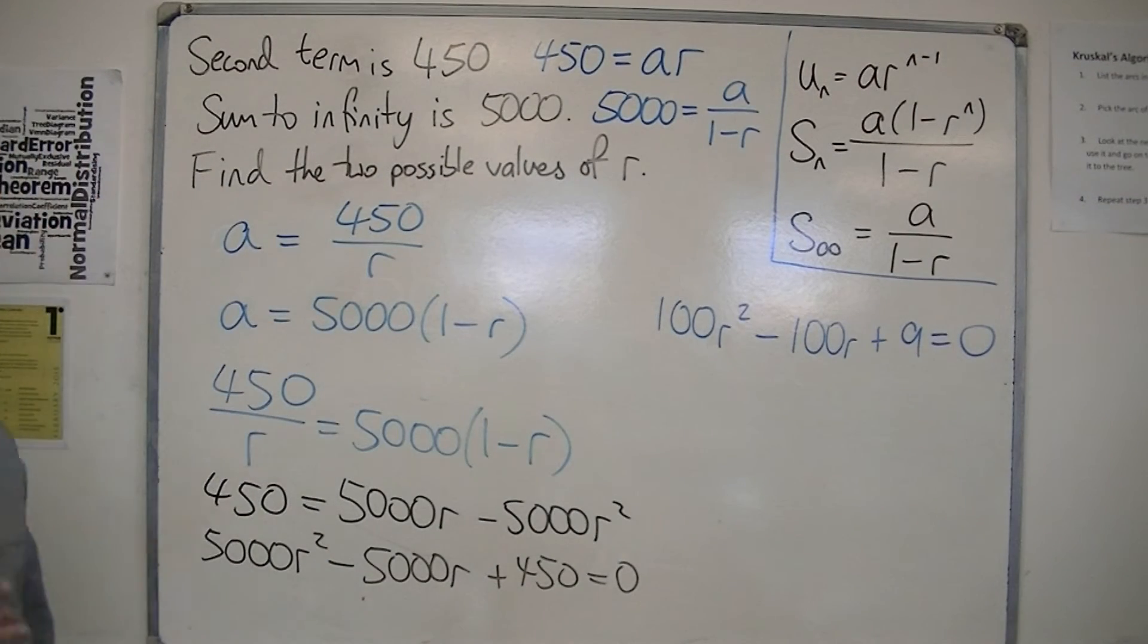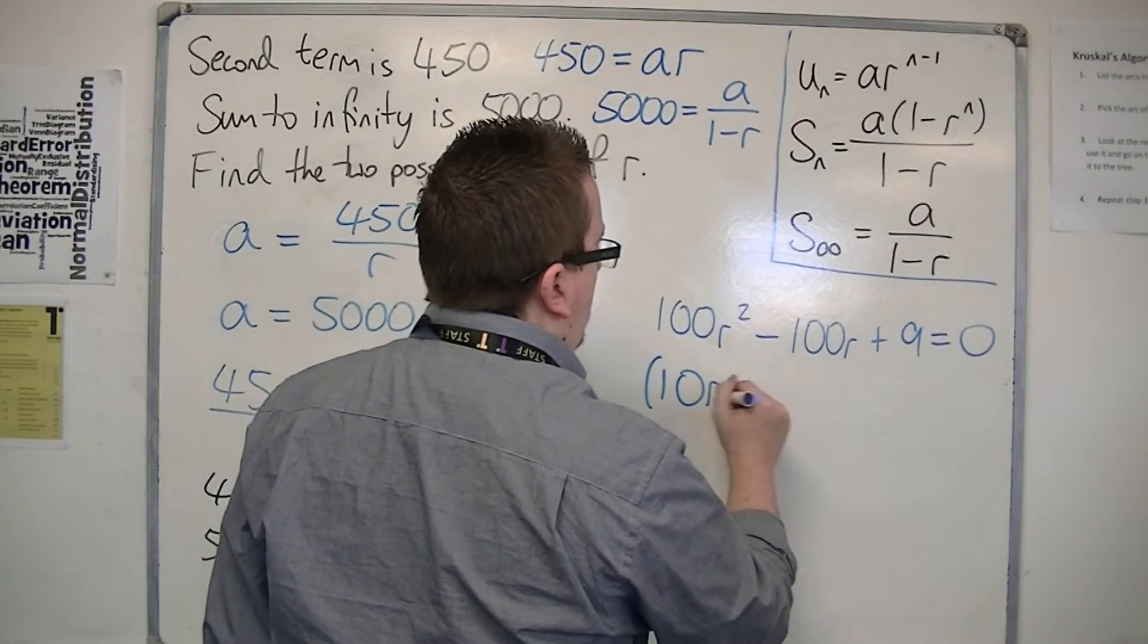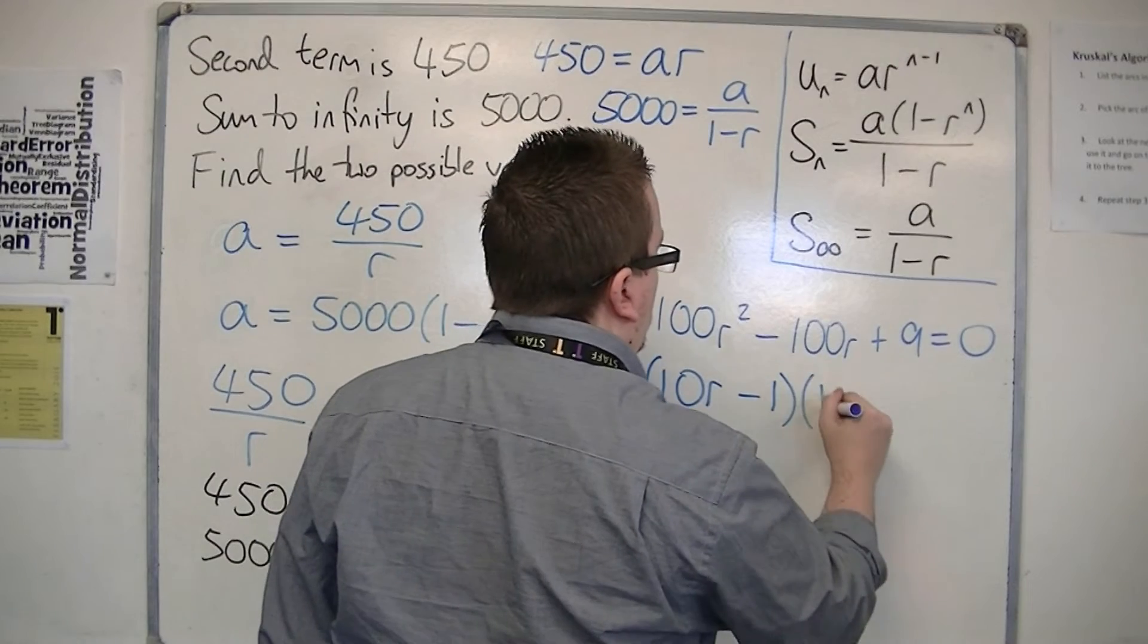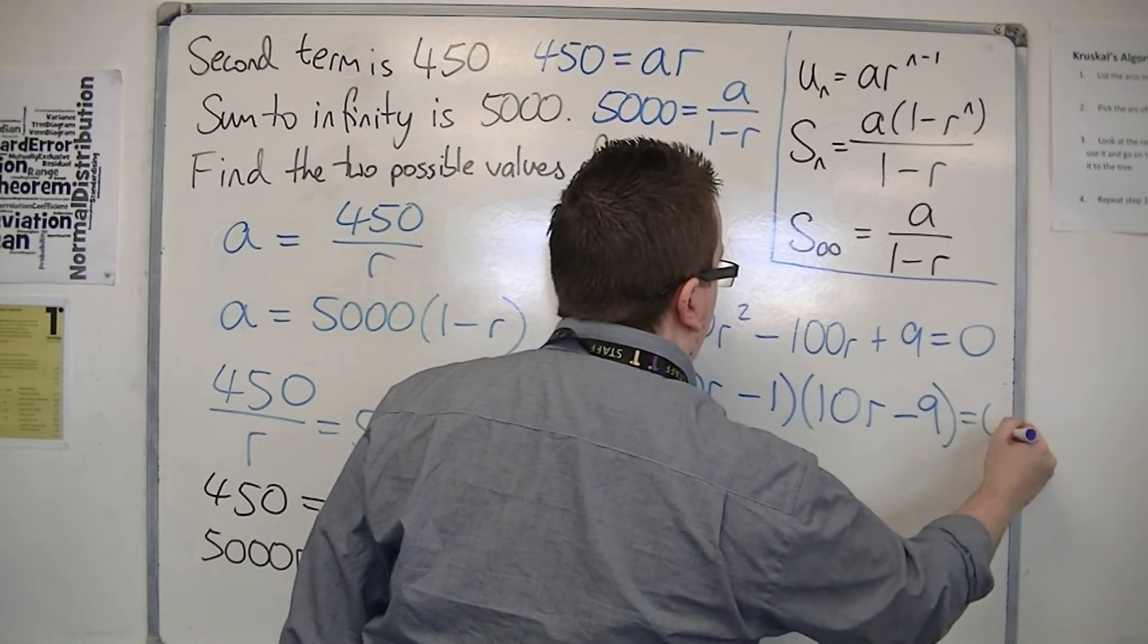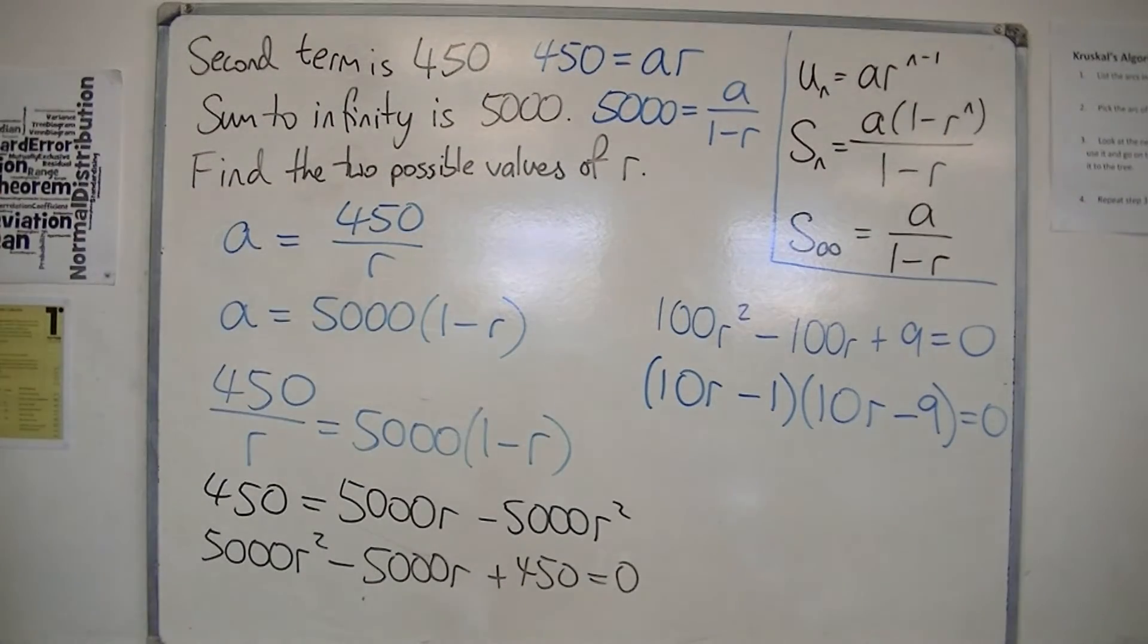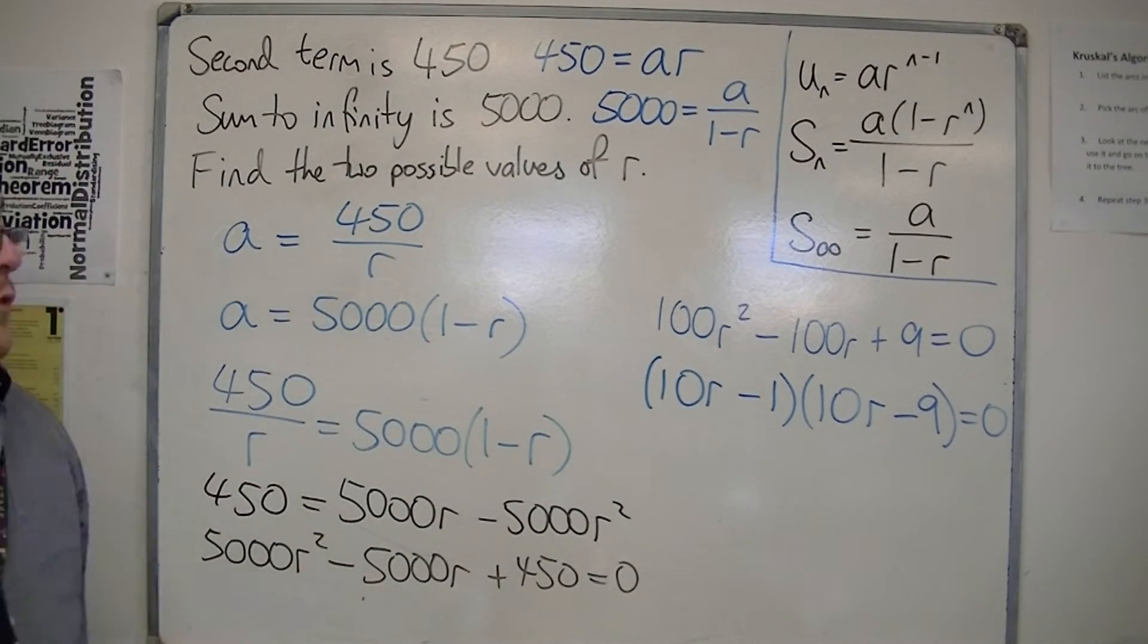But, this can be factorised. So, this is 10 r minus 1 times 10 r minus 9. Okay? So, this can be factorised. Or, you could use the quadratic formula, whichever one you like.